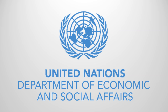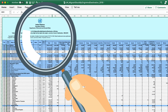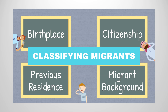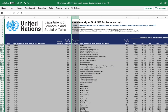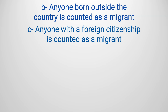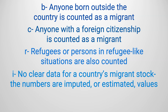Finally, let's look at the updated version of UNDESA's International Migrant Stock Spreadsheet. You may remember walking through how to use this sheet in an earlier explainer, but it's useful to revisit this large data source now that it's been reformatted. Remember that this data source is a compilation of nationally reported migrant stock data, and some countries define migrants differently as discussed in the classifying migrants for statistical purposes video. There are some codes in column E signifying these different definitions: Code B shows that anyone born outside the country is counted as a migrant; C indicates that anyone with a foreign citizenship is counted as a migrant; R means that refugees or persons in refugee-like situations are also counted; and I means that there is no clear data for a country's migrant stocks, so the numbers are imputed or estimated values.